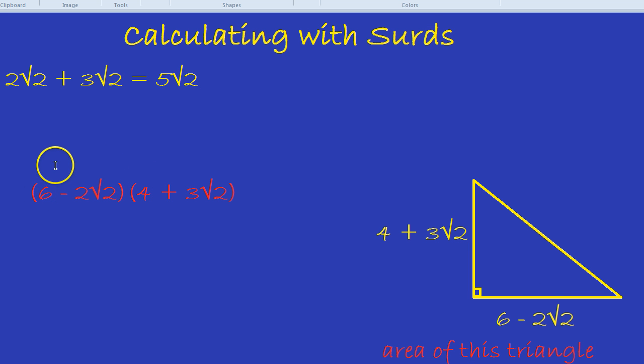We're going to use FOIL, which is my method for multiplying out brackets. It's a method that many students like, but there are many other methods. So first, 6 times 4, which is 24. It's a method that I learnt at school as well, so it helps me to do it. 6 times by 4 is 24.